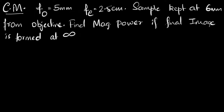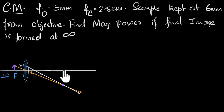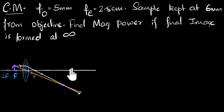Let's quickly draw our compound microscope. It consists of two lenses. The objective lens — the goal of the objective is to create a large magnified image. As a result, we usually keep the sample very close to the principal focus but outside it. The objective has a five millimeter focal length, but the sample is kept at six millimeters, a little bit outside the principal focus. This produces a large magnified image.